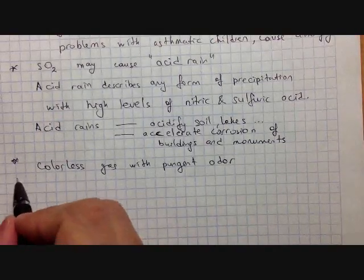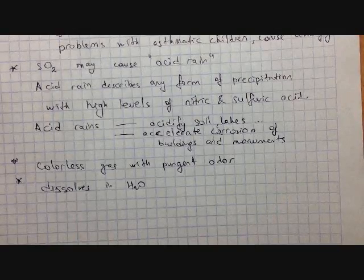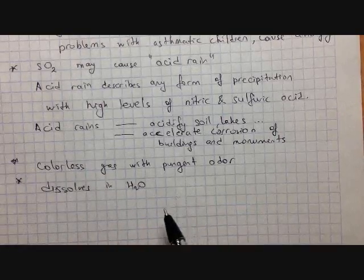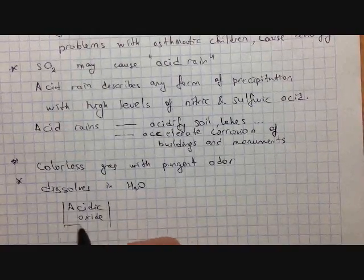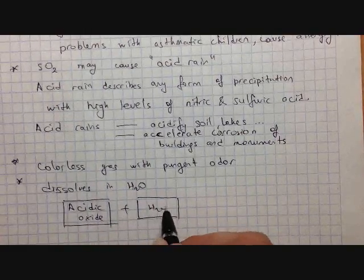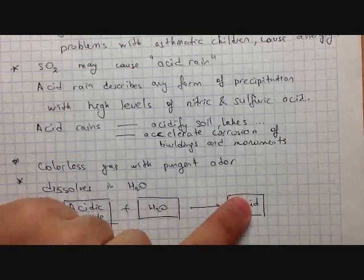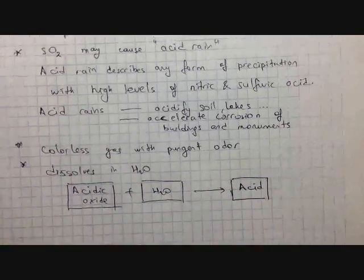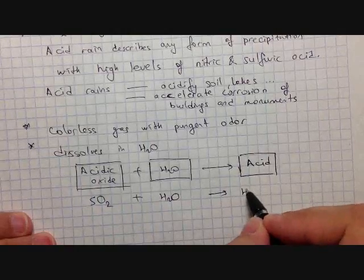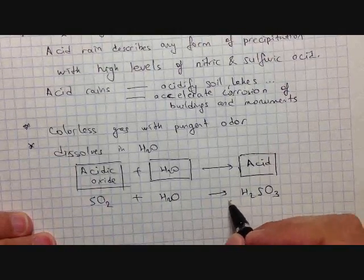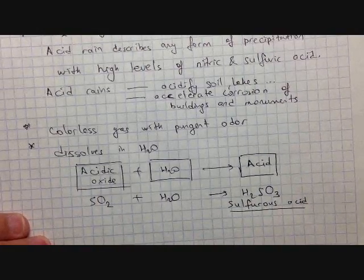Sulfur dioxide has a pungent odor and dissolves in water. Because it is an acidic oxide, acidic oxide plus water gives an acid. So sulfur dioxide plus water produces sulfurous acid (H₂SO₃). Remember: acid oxide plus water gives acid; basic oxide plus water gives base.